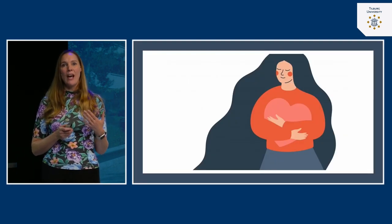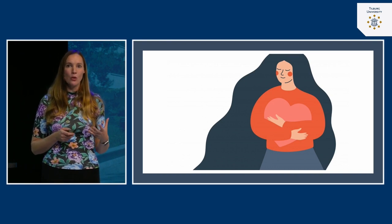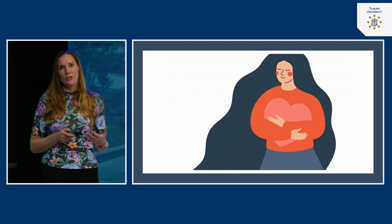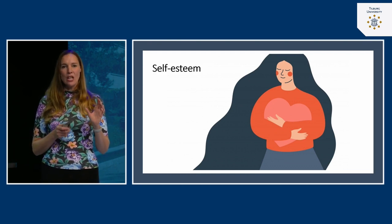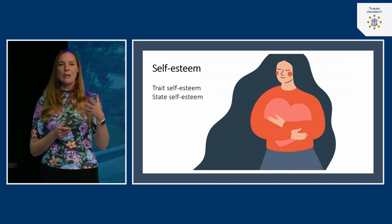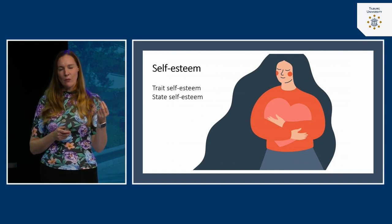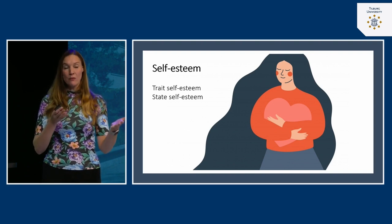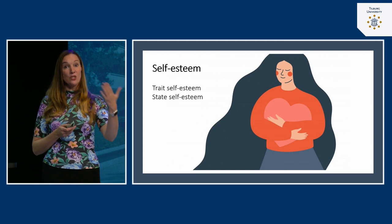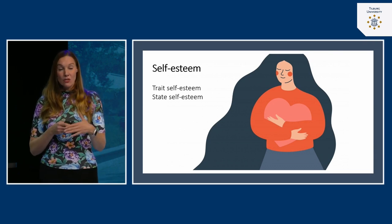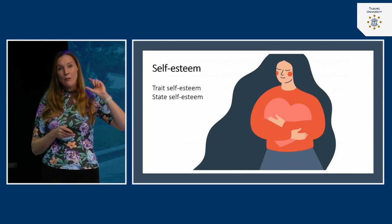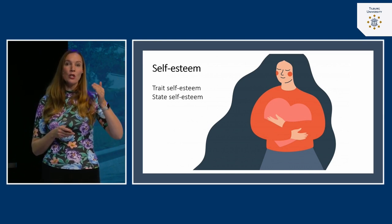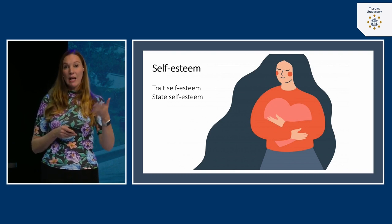Every individual has a basic need to feel good about themselves — this is the self-enhancement motive — and this is captured in our self-esteem. Interestingly, self-esteem is in one way a stable trait, called trait self-esteem. People differ: some generally feel better about themselves than others, while some chronically have a lower sense of self-worth. But self-esteem can also fluctuate over time, making it also a state.